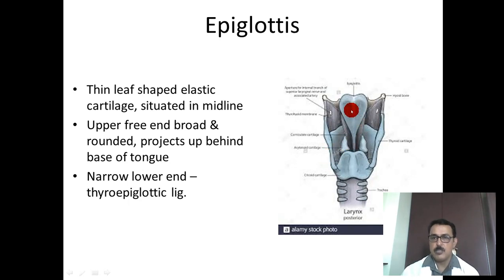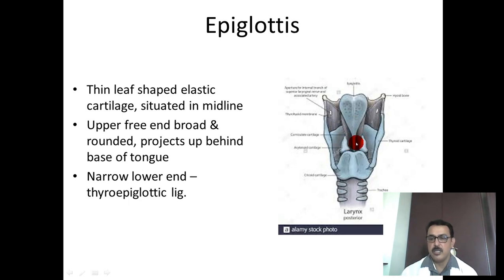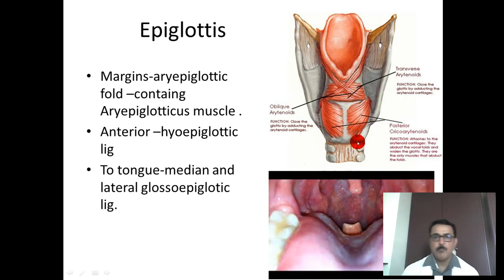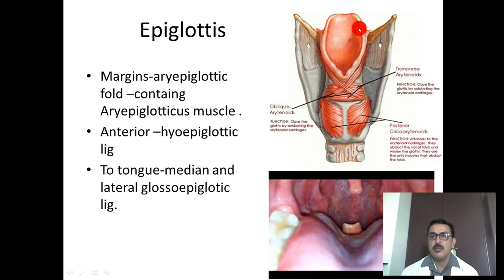The epiglottis is a leaf-shaped elastic cartilage situated in the midline. It has a broader upper free border and a lower tapering attached border. The lower part is attached to the thyroid cartilage by the thyroepiglottic ligament. The margins of the epiglottis are connected to the arytenoid by a fold of mucosa called the aryepiglottic fold, present on both sides. Inside the aryepiglottic fold is a muscle called the aryepiglotticus muscle.